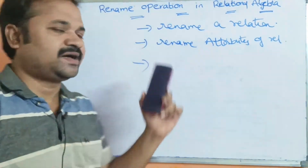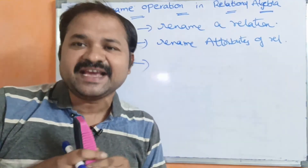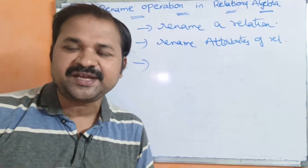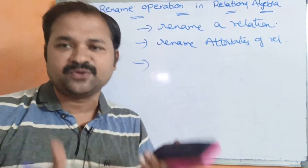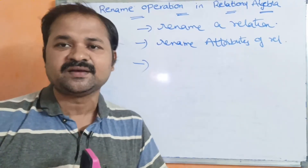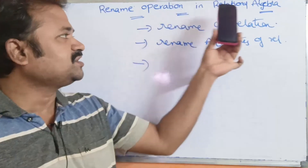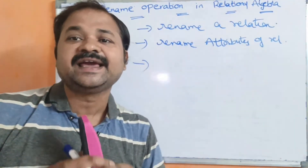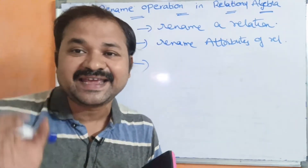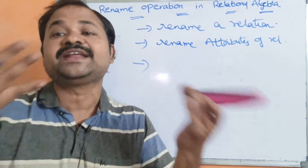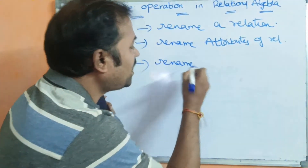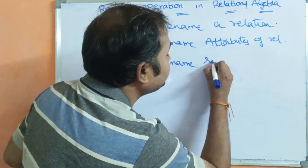We know that the output of any relational algebra operator is a relation — whether it is a select operator, project operator, union operator, intersection, set difference, or join operator. By using the rename operator, we can rename the result of a relation.